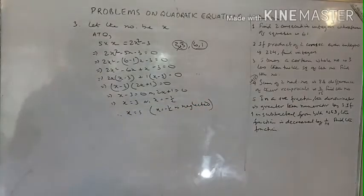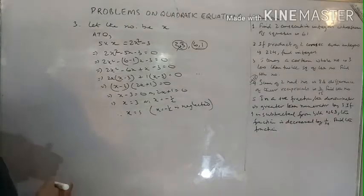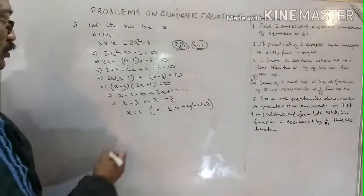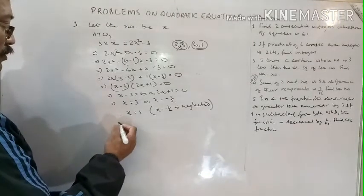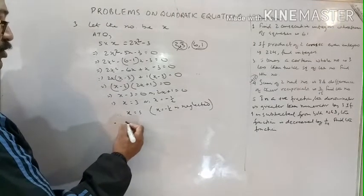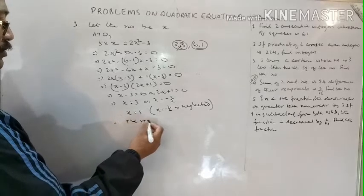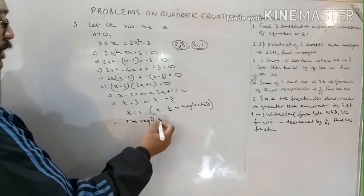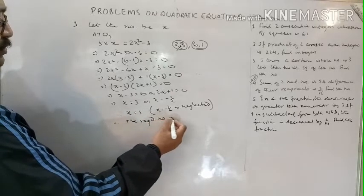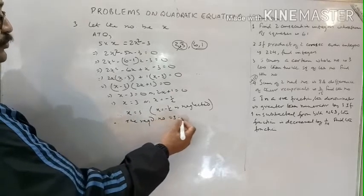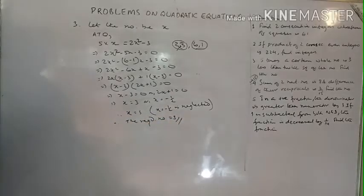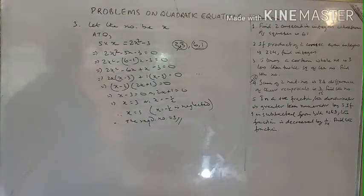Since x must be a whole number, x equals minus 1/2 is neglected because it is not a whole number. Therefore, the required number is 3.